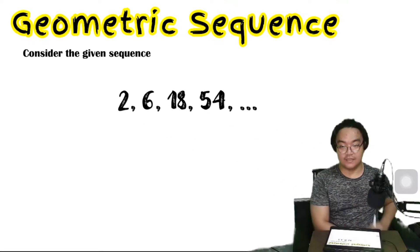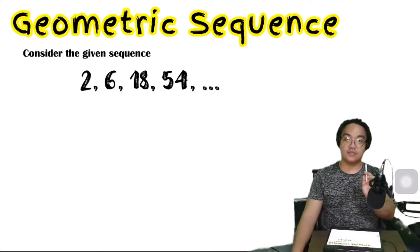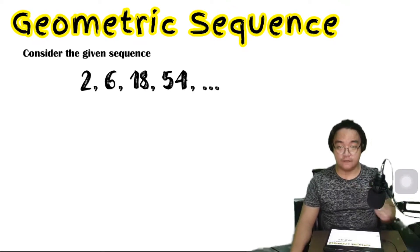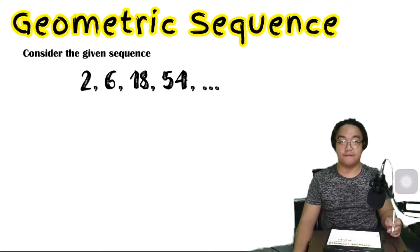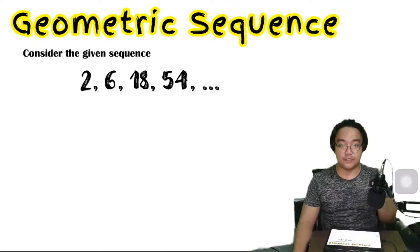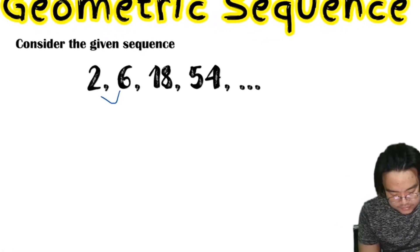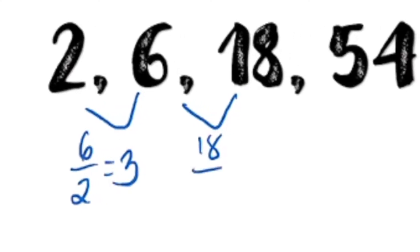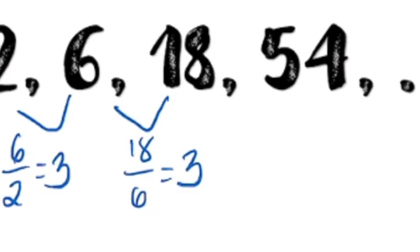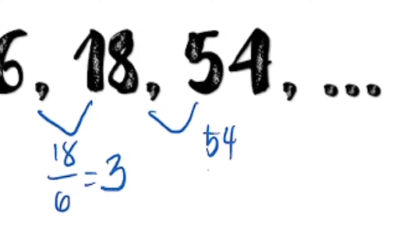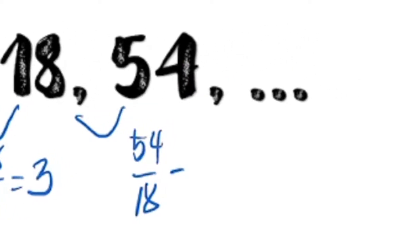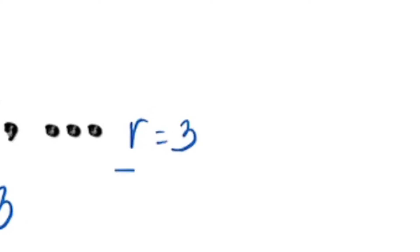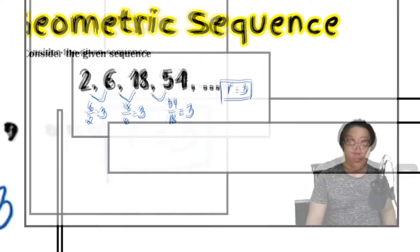Consider the given sequence 2, 6, 18, 54, and so on. From the previous video, we learned that we can find the common ratio by simply dividing any term by its preceding term. So 6 divided by 2 gives positive 3, 18 divided by 6 gives positive 3, and 54 divided by 18 gives positive 3, which means the common ratio is positive 3.